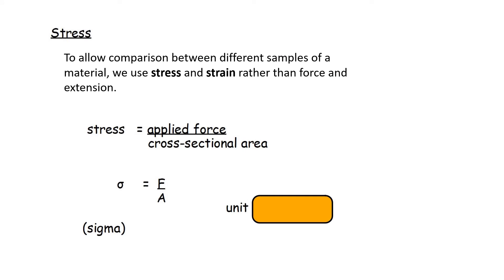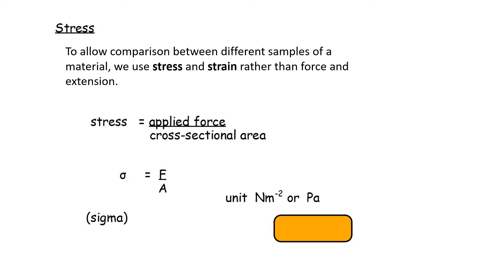Key term: stress. To allow comparison between different samples of a material, we use stress and strain rather than force and extension. Stress equals applied force divided by cross-sectional area, written as σ = F/A. The unit of stress is newtons per metre squared, or pascal — one newton per metre squared equals one pascal. You may recall the pascal from pressure, as pressure also equals force divided by area, but stress is specifically used when applying tensile or compressive forces to materials.